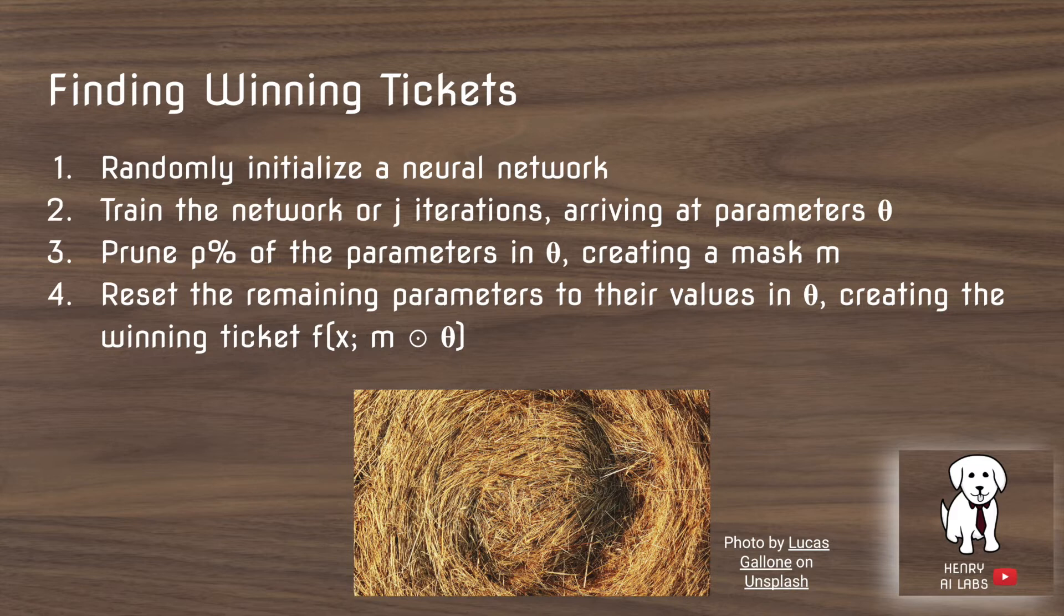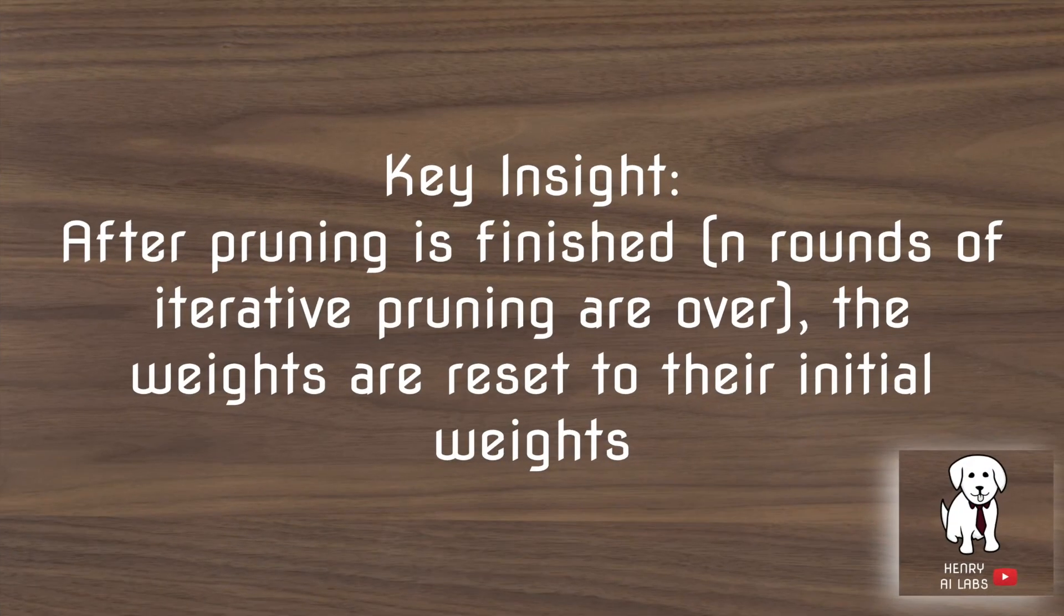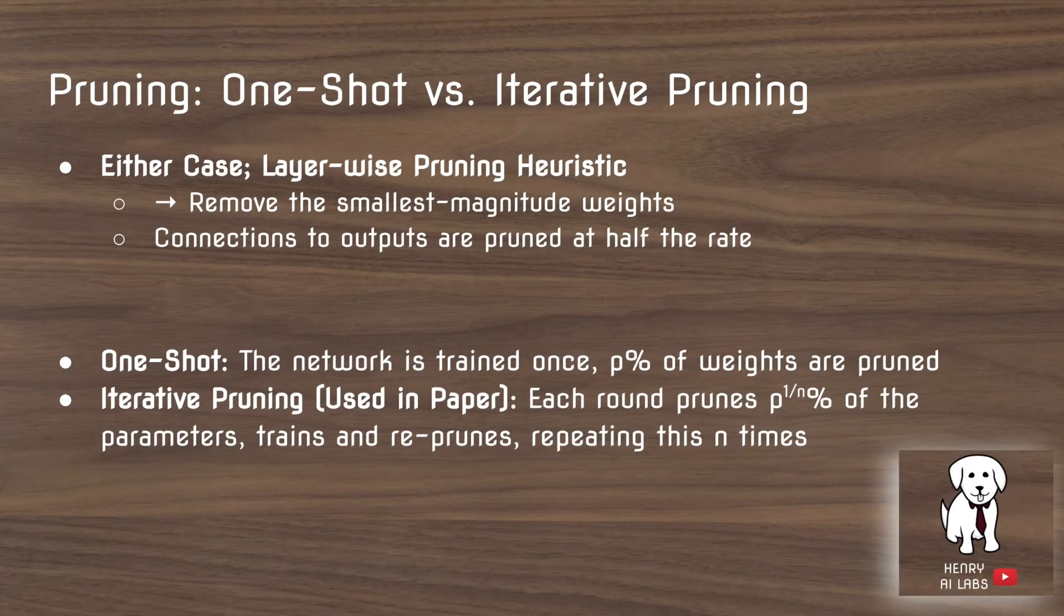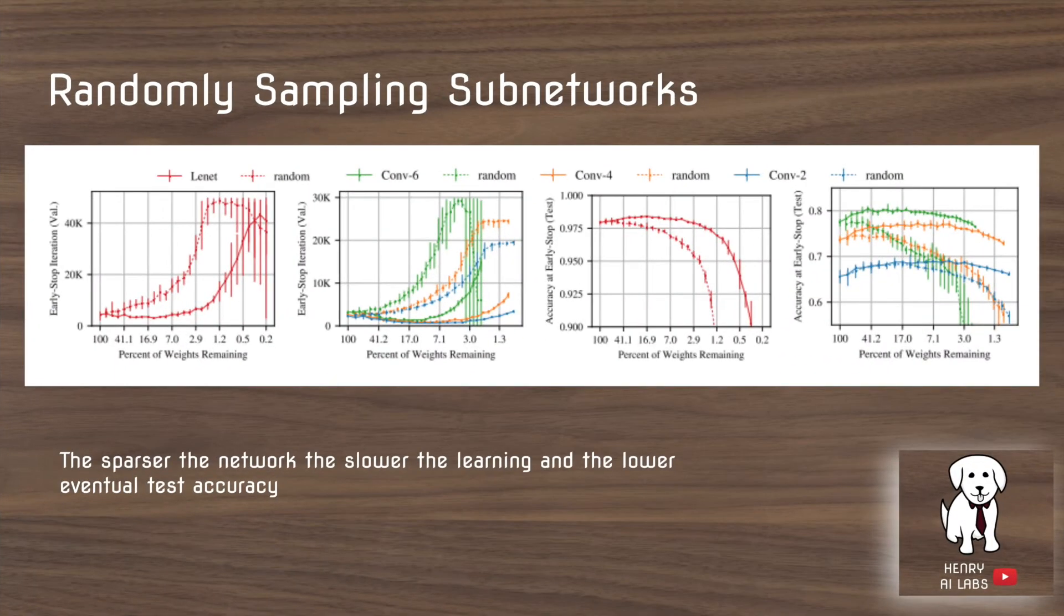So how do we find the winning tickets? How do you prune the neural networks? There are two ways of doing this. You can either do one-shot pruning or iterative pruning. After the pruning is finished, with either method, the weights are reset to their initial weights. One-shot pruning says you train the network and then go through it and prune it. Iterative pruning says each round prune P to the 1 over N percent, N being how many times you're going to commit to iterating through the pruning, and then iteratively prune the parameters. And then train, reprune, repeat this ten times. In either case, there is this layer-wise pruning heuristic where you remove the smallest magnitude weights, and the connection to the output, meaning the features right before the output, you prune this at half the rate. You are less aggressive about pruning these weights.